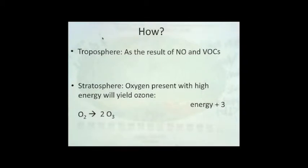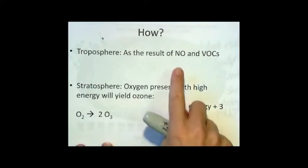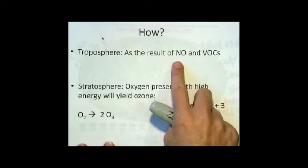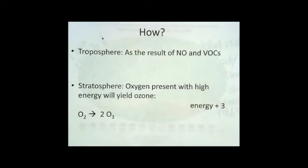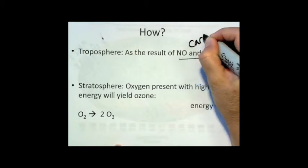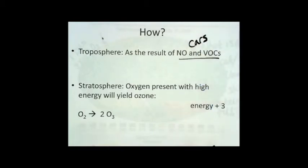It's the result of the production of the primary pollutants, nitric oxide and volatile organic compounds. The nitric oxide and the volatile organic compounds come from the cars, automobiles from the emission.